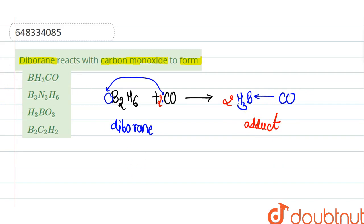So correct option is option number first one, BH3-CO. 2 moles of BH3-CO is formed, so first option is correct. Second is wrong, third is wrong, fourth is wrong. When diborane reacts with carbon monoxide, formation of the BH3-CO adduct, so first option is correct one.